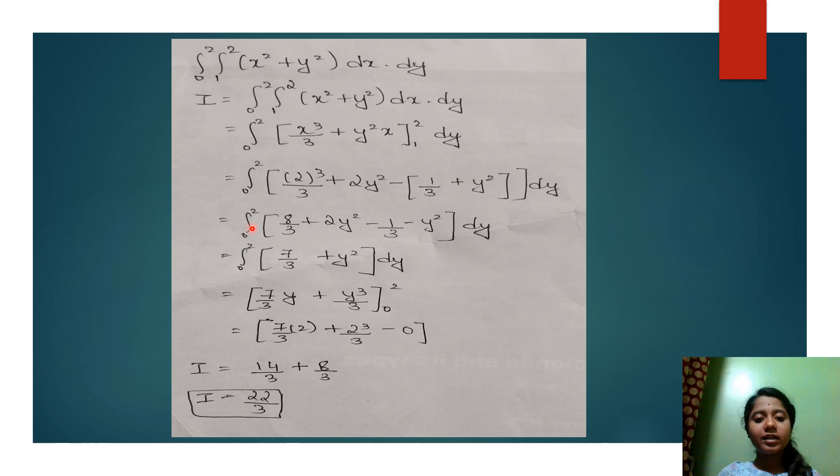The next step is to simplify. Integral 0 to 2: 2 cube is 8, so it will be 8 by 3 plus 2y square minus 1 by 3 minus y square into dy.